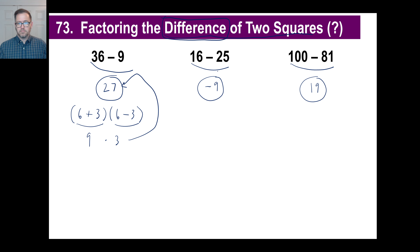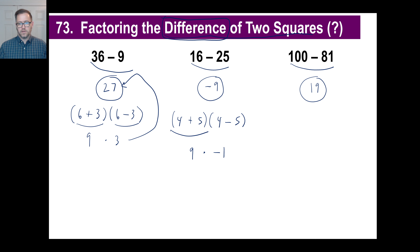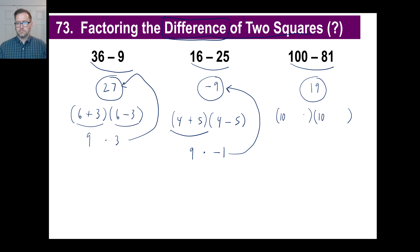See if it works for this one: 16 minus 25. The square roots are 4 and 5. Put them next to each other, do a plus with one and a minus with the other. Well, 4 plus 5 is 9. Multiply that by 4 minus 5, which is negative 1. And 9 times negative 1 — there's the answer, negative 9. Let's try 100 minus 81. The square root of 100 is 10, the square root of 81 is 9. 10 plus 9 is 19. 10 minus 9 is 1. 19 times 1 — there it is.